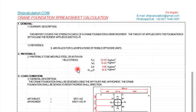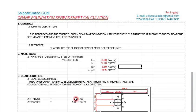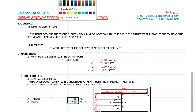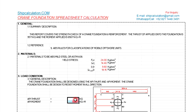The thrust applied on the foundation is 9,571 kilograms and the moment applied is 65,671 kilogram-meters. Depending on your crane vendor specification, you can change the applied thrust and the applied moment values accordingly.